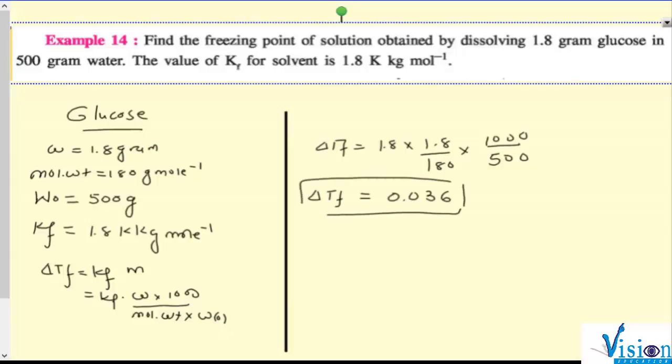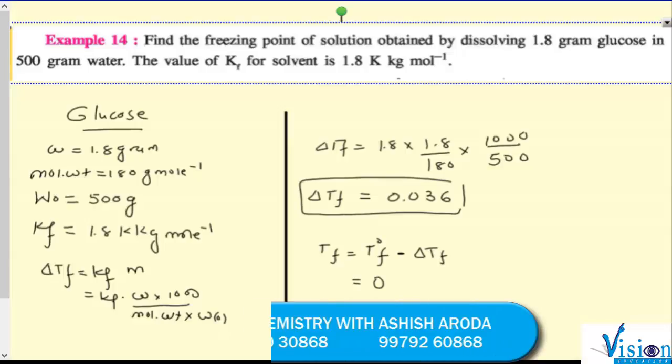ΔTf we got. Final freezing point, remember, is decreasing, so Tf° minus ΔTf. And Tf° of water, freezing point of water is zero degree Celsius. Zero minus 0.036.